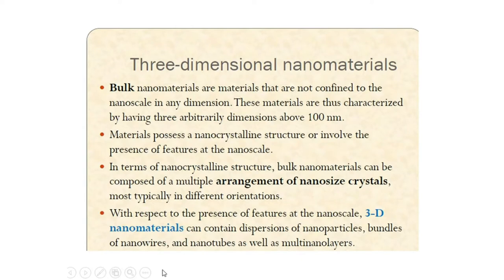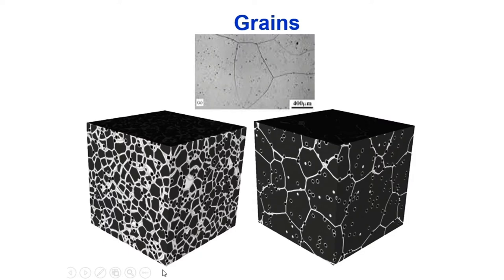3D nanomaterials — bulk nanomaterials — have none of their external dimensions X, Y, Z confined to nanoscale. But the material possesses a nanocrystalline internal structure; it can have multiple elements of nanocrystalline materials. 3D nanomaterials can contain dispersed nanoparticles, bundles of nanowires, nanotubes, or even multilayers. Looking at grains: these grains may be large in all three dimensions, but if they contain features less than 100 nanometers inside, we call them 3D nanomaterials.